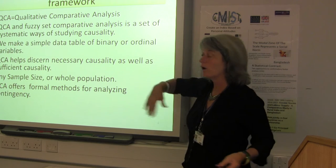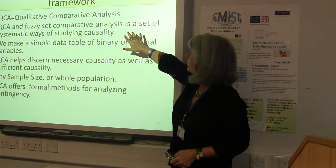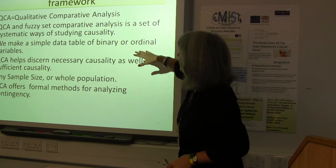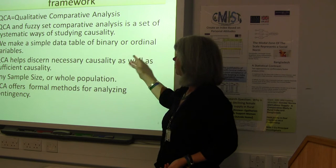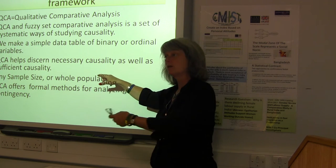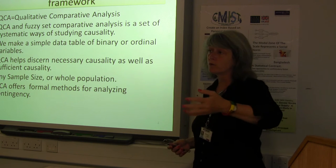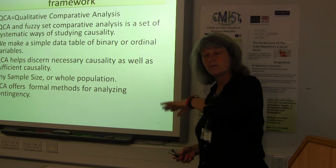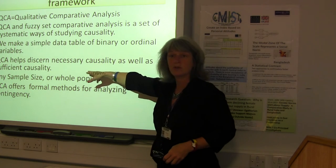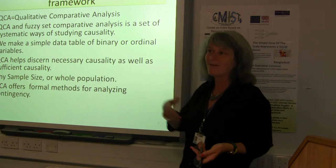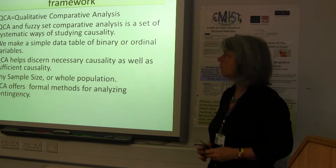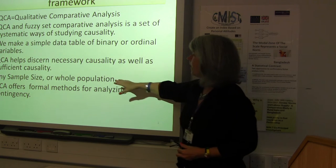I'll just explain what QCA is and then move on to the new part. QCA includes fuzzy set comparative analysis, and for those cases that are in the rows, it gives a way of studying any systematic causality that might emerge from the group. We make a simple data table — you saw the binary variable; you can have ordinal or continuous variables. You can then discern patterns that appear to be an X being necessary for Y — we may call it necessary causality — or an X being sufficient for Y. It turns out those are converses of each other. If an X is sufficient for Y, we may not wish to say it's necessary. If it's necessary, then it's also part of every sufficient combination that led to Y. So being necessary for Y means all the Ys have it, and we sort of drop out the necessary causes having analyzed them.